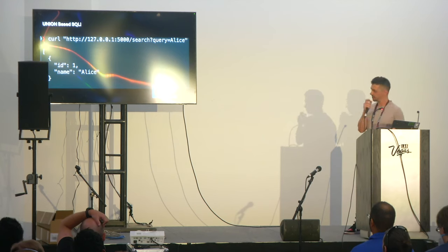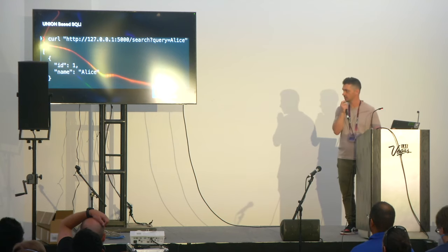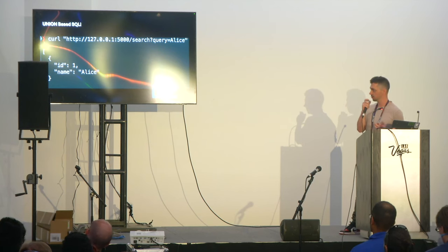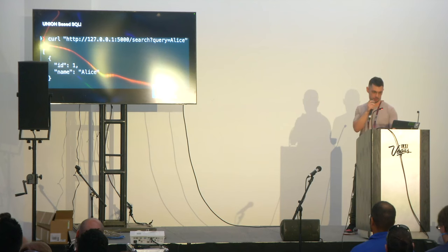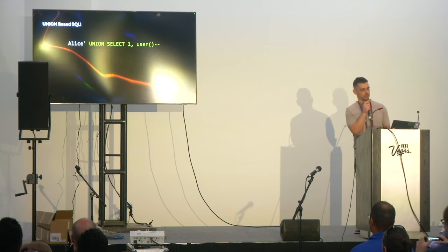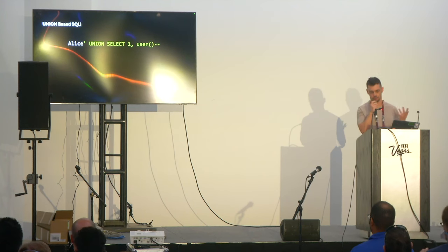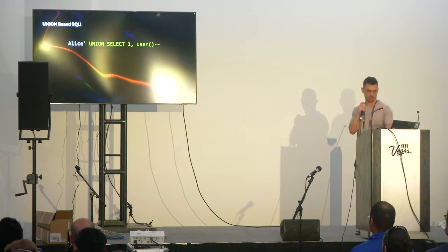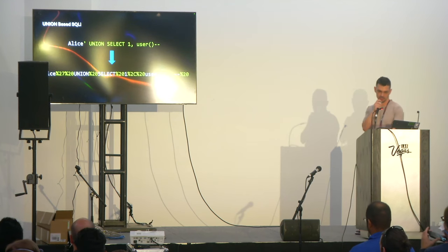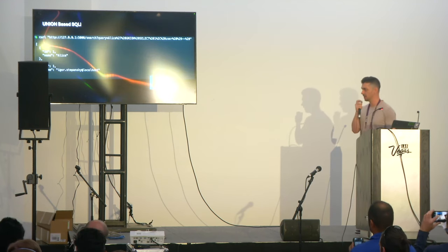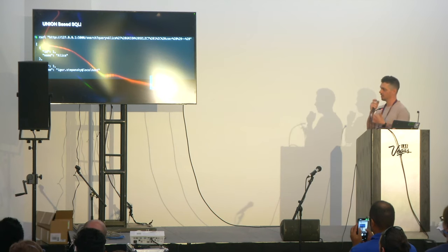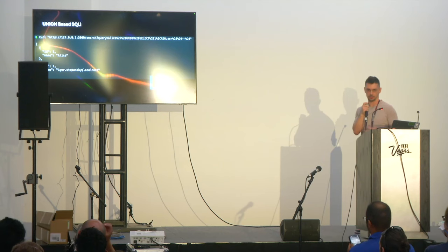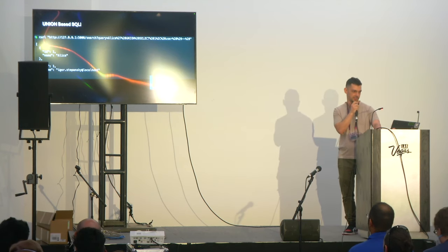Now for union-based attacks: we send a regular curl command to a server with a query parameter equal to 'Alice' and retrieve expected information. But when we inject a UNION SELECT payload to retrieve the current user connected to the database through the web application, we encode it, send it, and we get back both the Alice result and the current database user — information that's not supposed to be retrieved so easily.